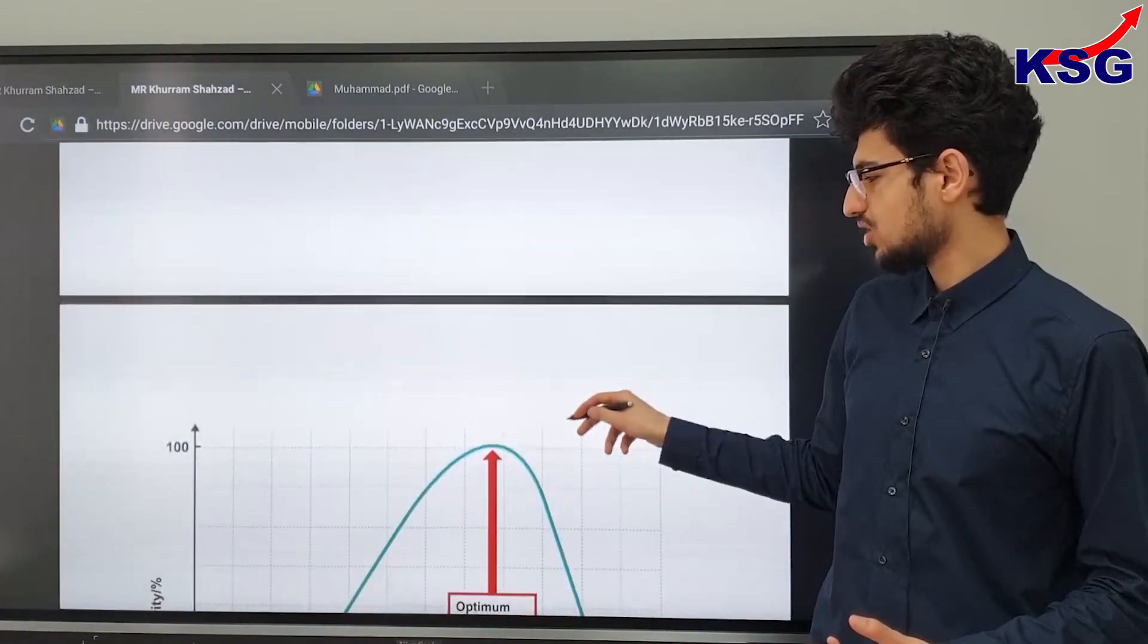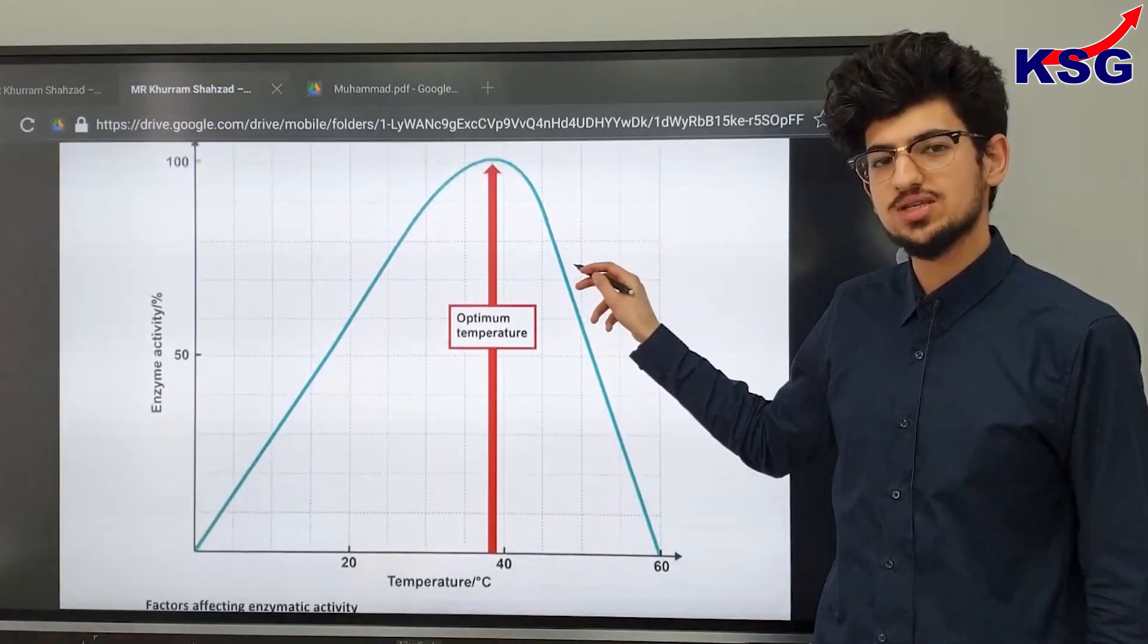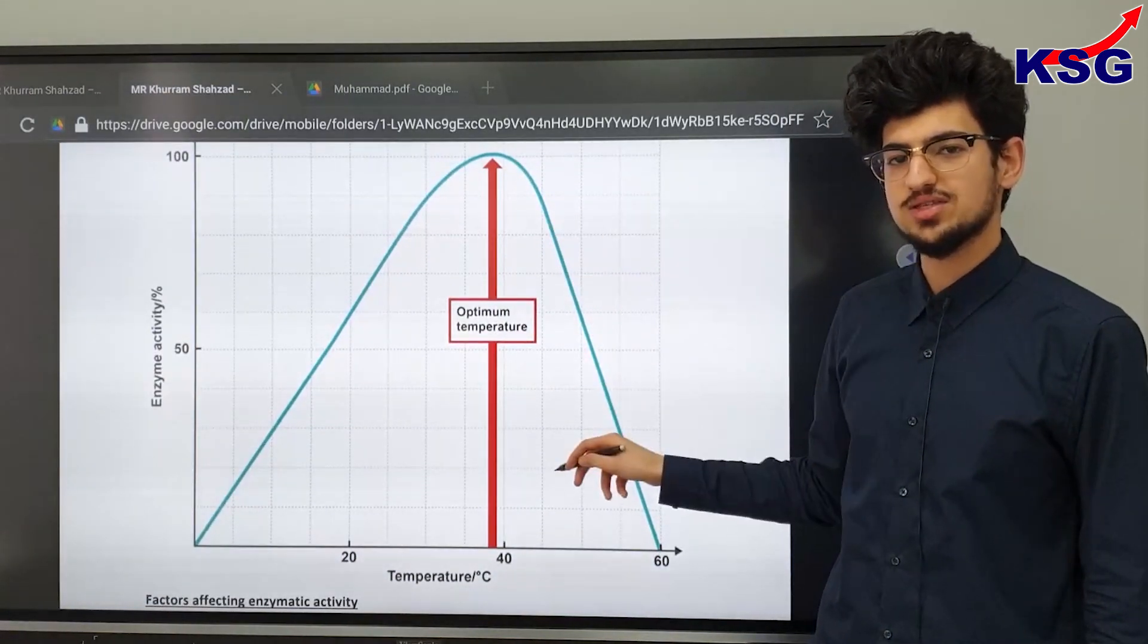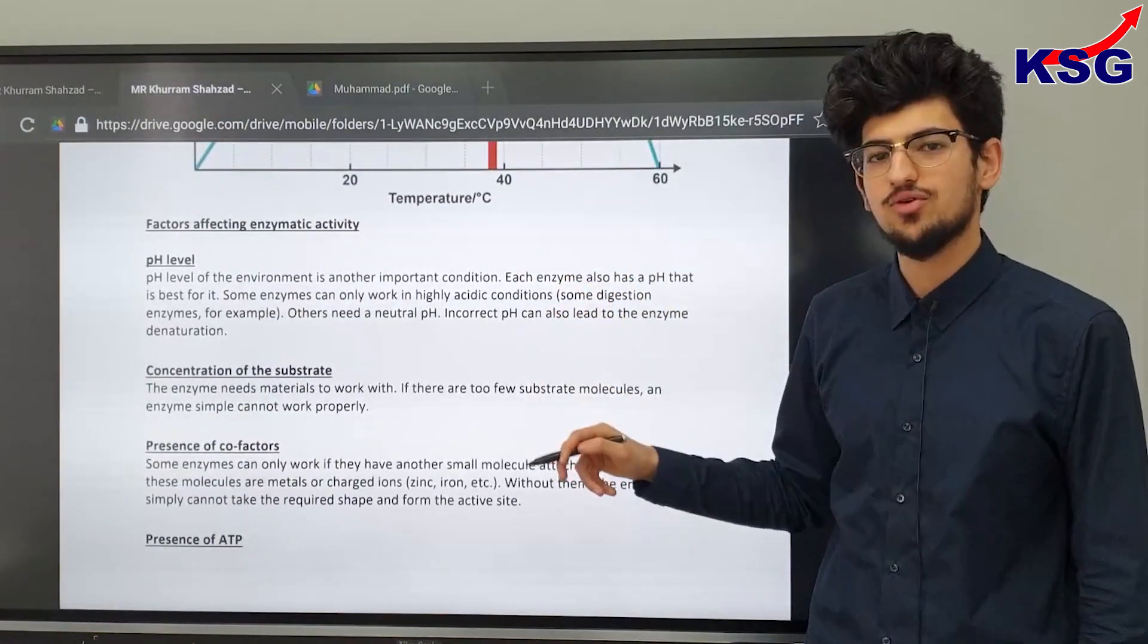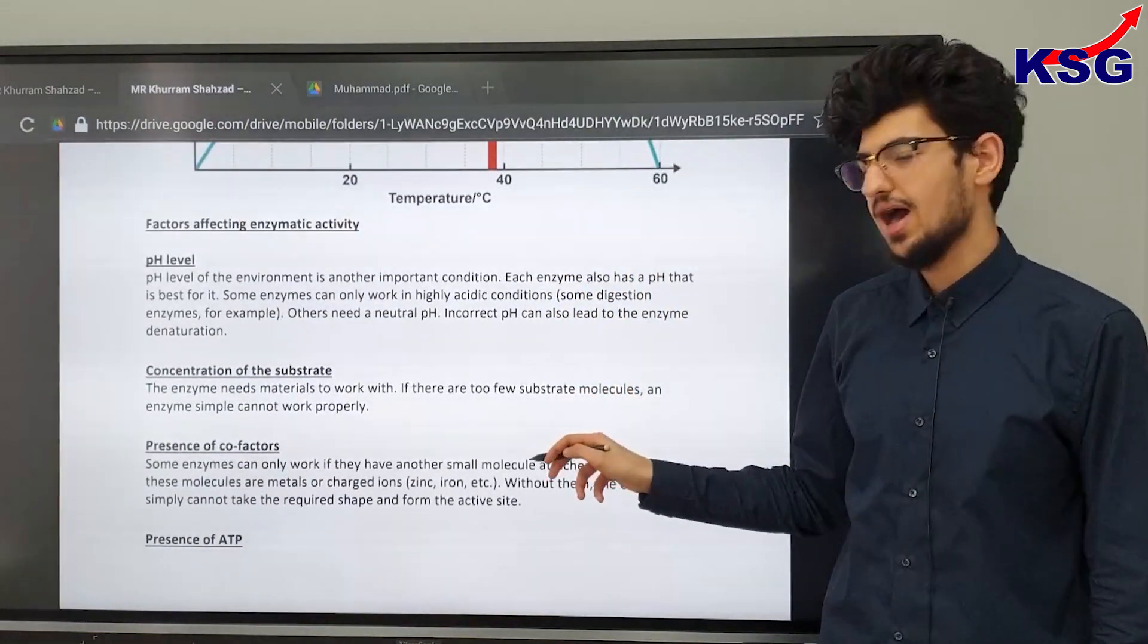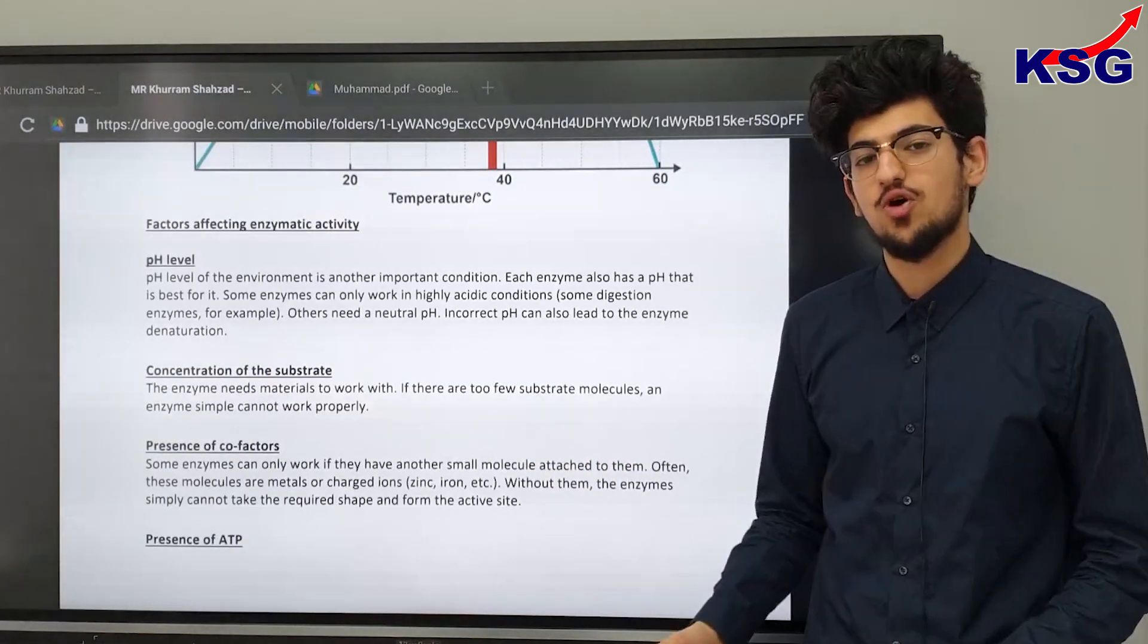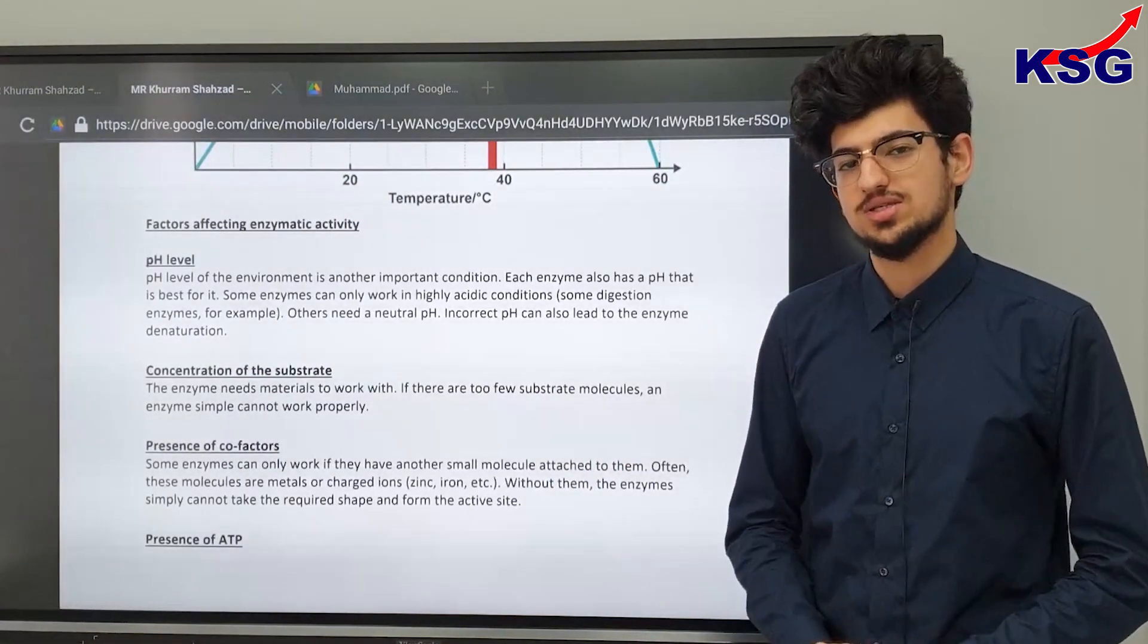Secondly as temperature increases the rate of reaction increases up to an optimum point and then starts to decrease. And the other factors that affect enzyme activity are pH level, concentration of substrate and the presence of cofactors and the presence of ATP.